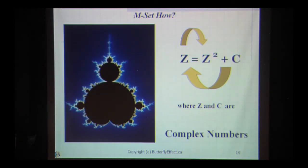The Mandelbrot set is generated by iterating a very simple equation. Z equals Z squared plus C, where Z and C are complex numbers. Well, that seems simple enough, but what the heck is a complex number?